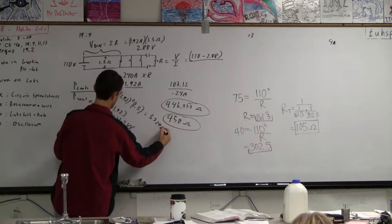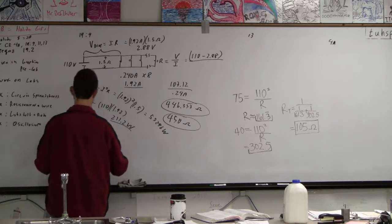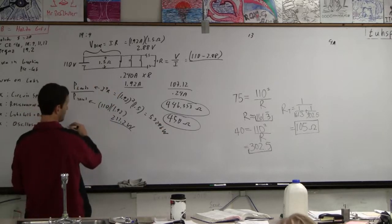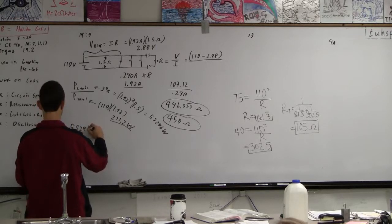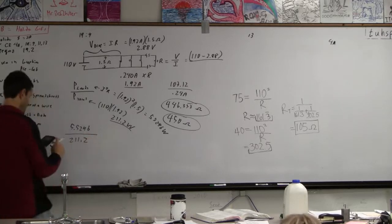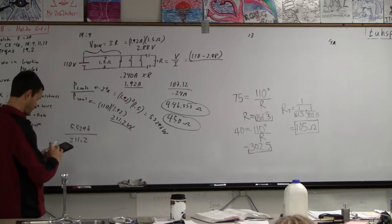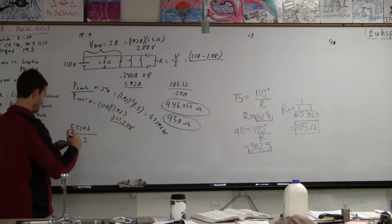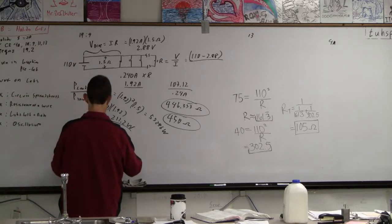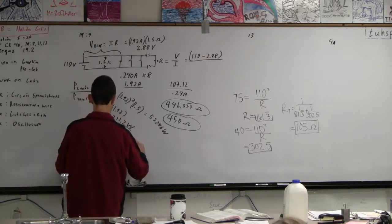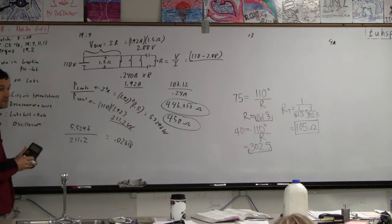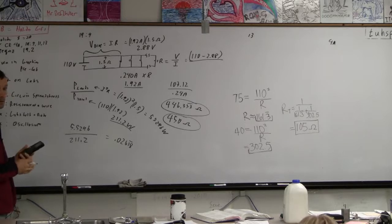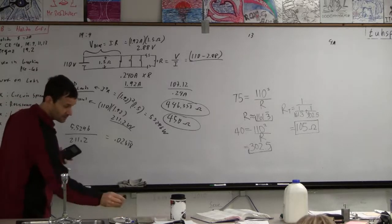Bless you in a manner appropriate to your cultural and spiritual heritage. 1.92 squared times 1.5 equals 5.5296 watts. And then, of course, we can just figure out the ratio. They want the ratio. So 5.5296 over 211.2 is 0.02618 repeating, which I guess would be 2.6 percent. Yeah? Which is the answer in the book? Yeah.